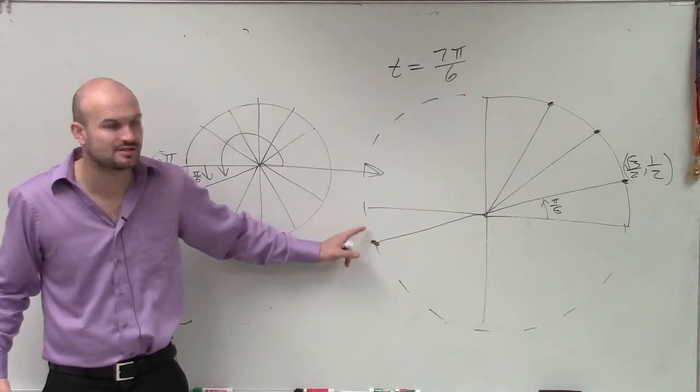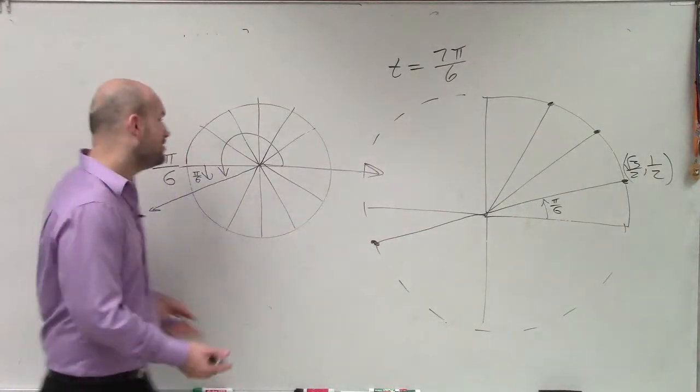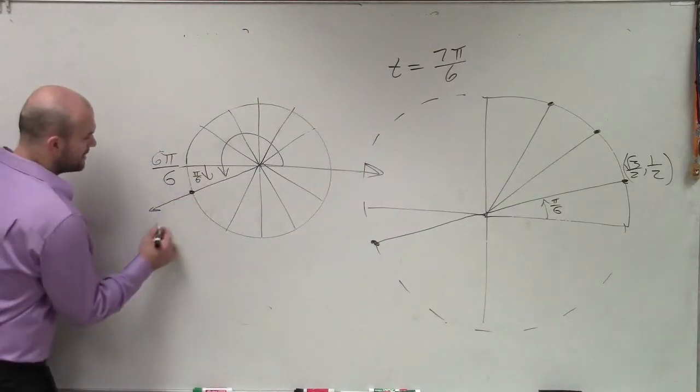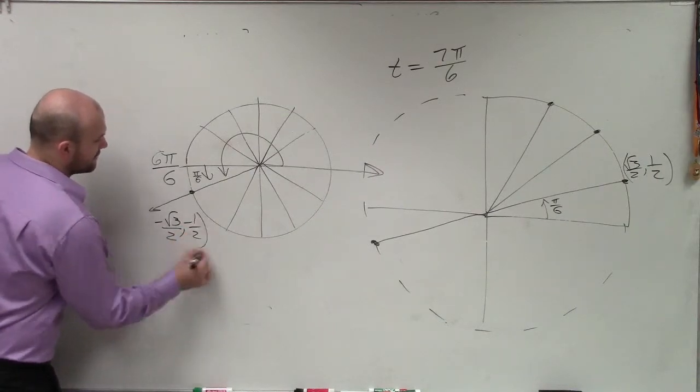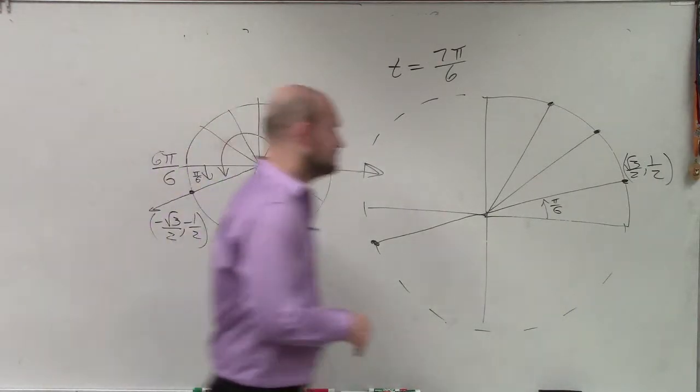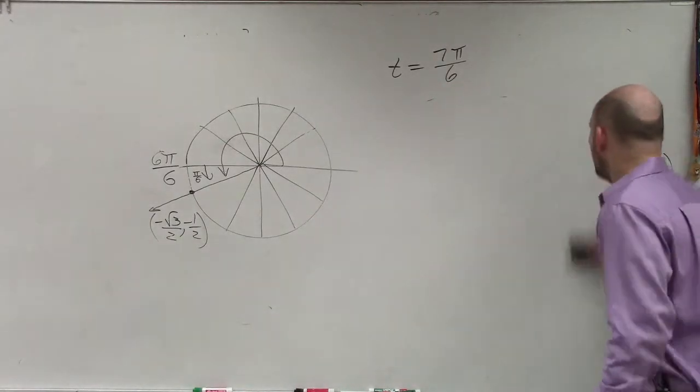Now it's in the third quadrant. So if that's my point, what's going to be negative? Both of them, right? So therefore, my point is going to be negative square root of 3 over 2 comma negative 1 half. So now that I've figured out the point, or I figured out the angle, then I figured out the point, now I just need to go through and evaluate the six trig functions.